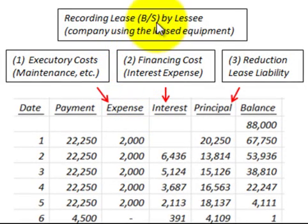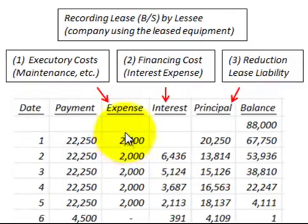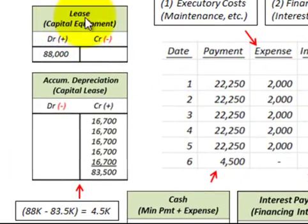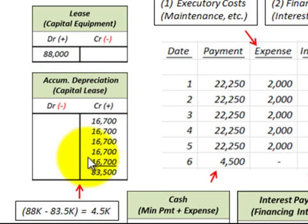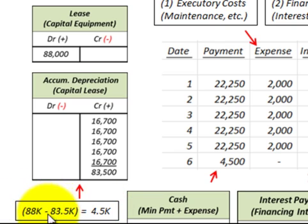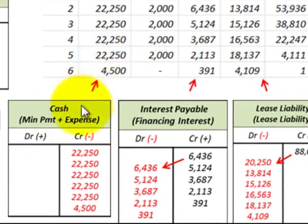To record the lease on the balance sheet by the lessee — the company using the leased equipment — working off the amortization schedule: we debit the leased capital equipment account for $88,000, which is the present value of the minimum lease payments. Accumulated depreciation accrues each year, leaving $4,500 remaining at the end of the lease term. The cash payment each period covers the minimum payment plus the executory expense.